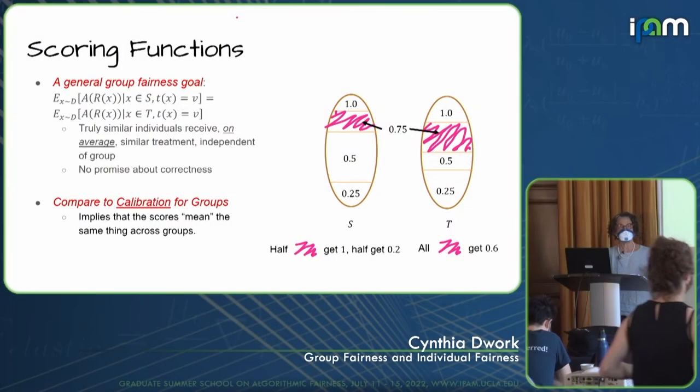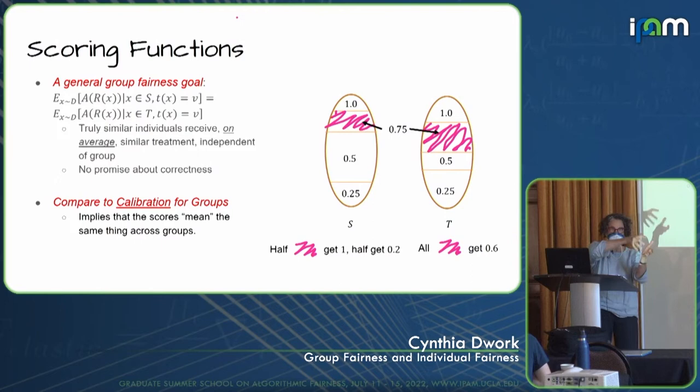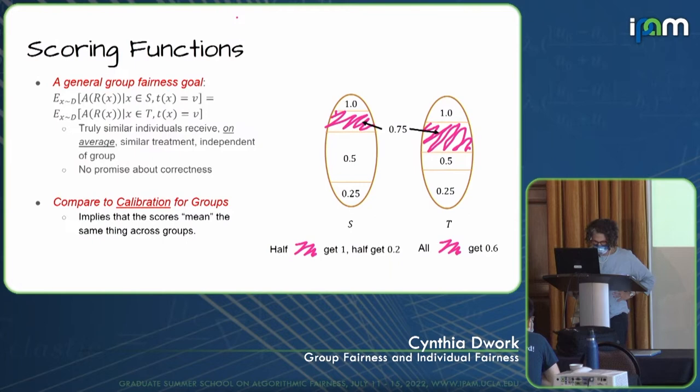Remember that our instances x are mapped through some representation mapping — that's what r of x is. It's the representation of human being x. We have an algorithm that's running on a scoring function that's operating on the representations of people.